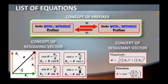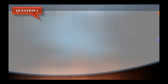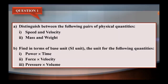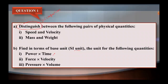Kita lihat kepada soalan yang pertama. Soalan pertama adalah distinguish between the following pairs of physical quantities: speed and velocity, mass and weight. Yang kedua, find in the term of base unit iaitu SI unit, the unit for the following quantities — power multiplied with time, force multiplied with velocity, and pressure multiplied with volume.